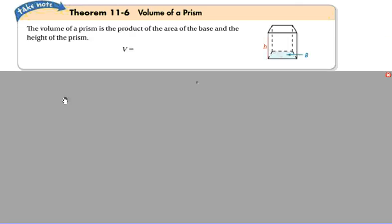Continuing on, we're going to go to Theorem 11.6, and this is the volume of a prism. This is one that you've learned a long time ago. The volume of a prism is the product of the area of the base and the height. So it's B times h, or if you're looking at a prism, you could say length times width times height. The area of the base would be length times width, and you multiply it by the height.